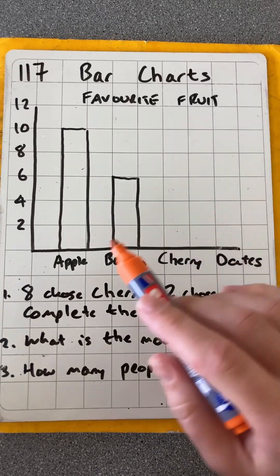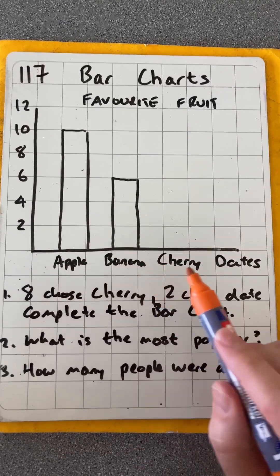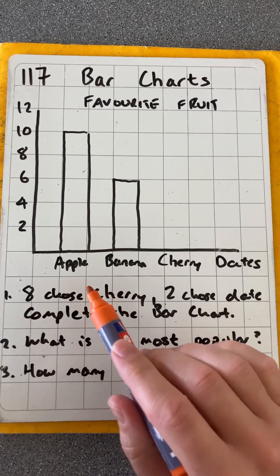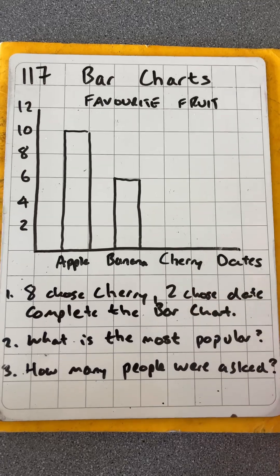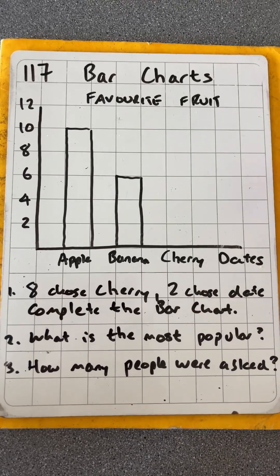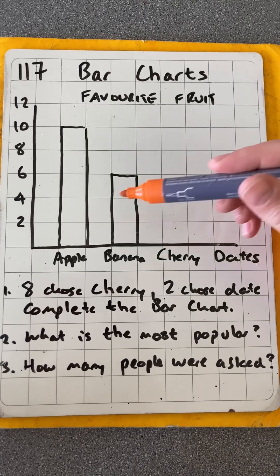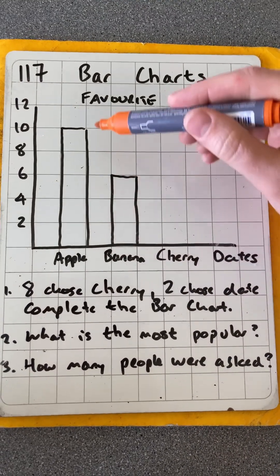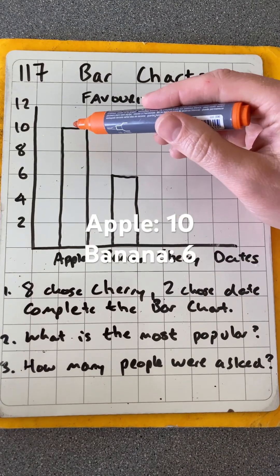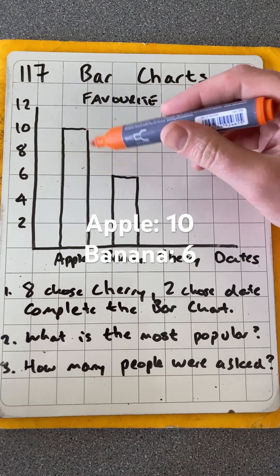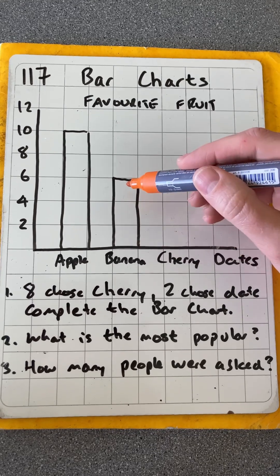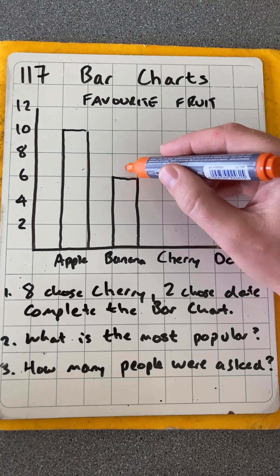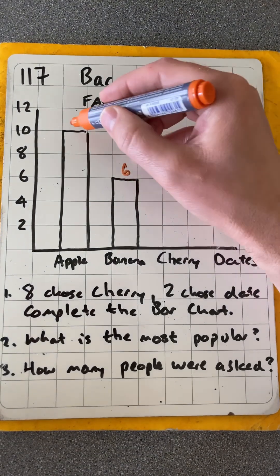For these I've chosen A, B, C, and D: apple, banana, cherry, and dates. We can see the bar drawn for apple up to 10, and the bar drawn for banana up to 6.